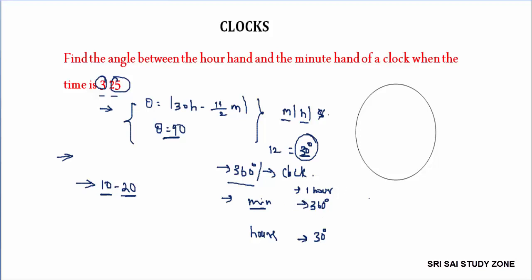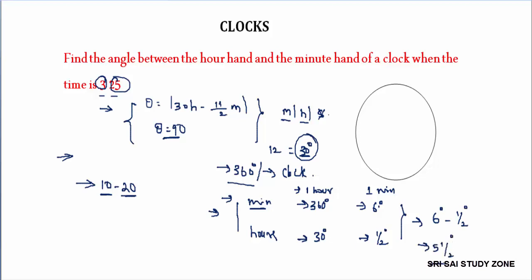In one hour the hour hand moves 0.5 degrees per minute. In one minute the minute hand moves 6 degrees, and the hour hand moves half a degree. So the difference between the minute and hour hands per minute is 5.5 degrees — that is equal to 5 and a half degrees. This is the key difference.